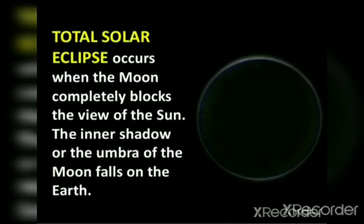Let's start with the total solar eclipse. Total solar eclipse occurs when the moon completely blocks the view of the sun. The inner shadow, the umbra of the moon, falls on the earth. This is called total solar eclipse. As the name indicates, the total view of the sun is blocked by the moon. That's why this is called total solar eclipse.